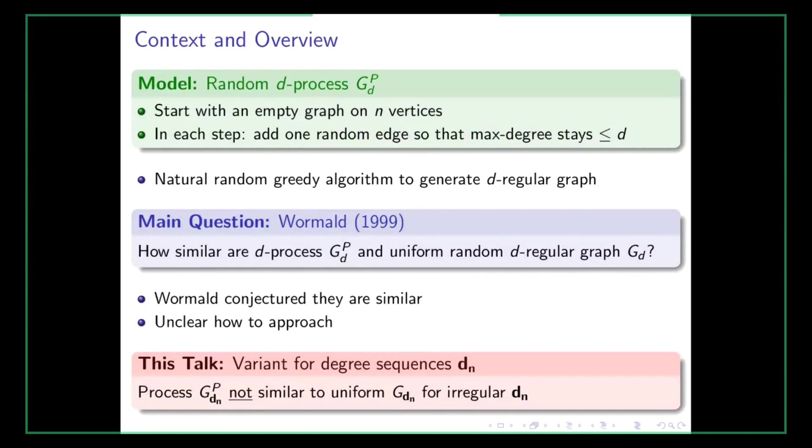To put our work in context, let me first talk about the random d-process. The random d-process is a random graph process where you start with an empty graph on n vertices, and then in each step you add one random edge such that the maximum degree in the graph stays less than or equal to d. For example, if you end up with a d-regular graph, then you cannot add any more edges, because then you would break the maximum degree constraint.